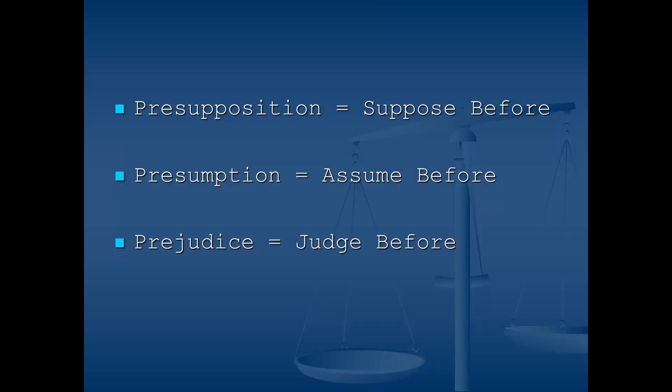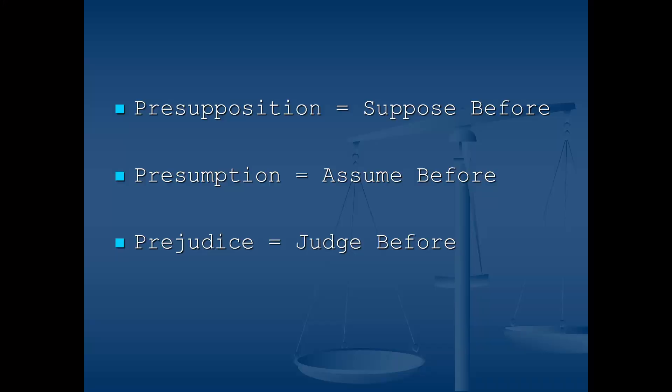Let's look at what these words mean. Presupposition comes from the words 'suppose' and 'before' — in other words, you suppose something before considering the facts. Presumption comes from the words 'assume' and 'before' — you assume something to be true before listening to the arguments. Prejudice comes from the words 'judge' and 'before' — you judge a case before weighing the evidence.